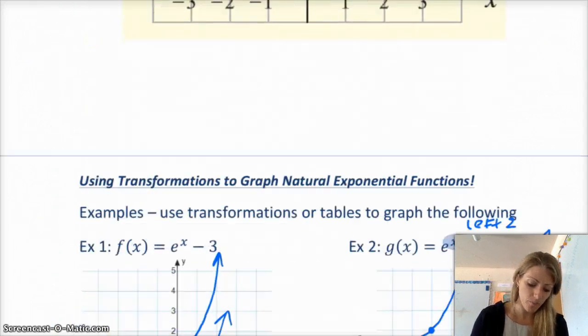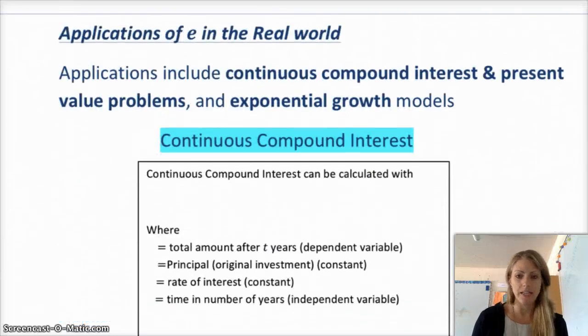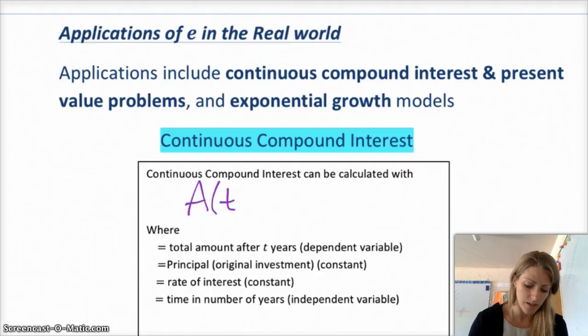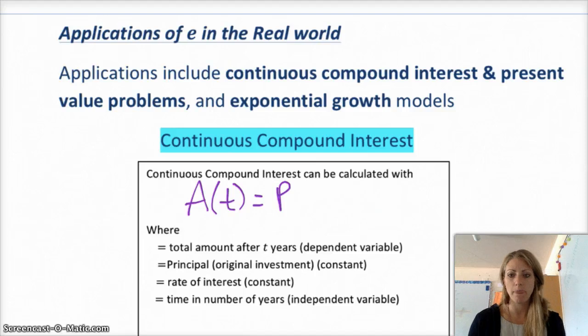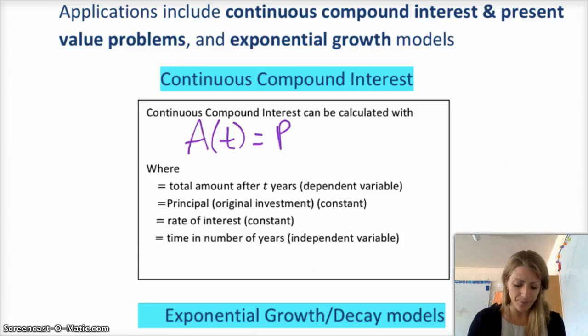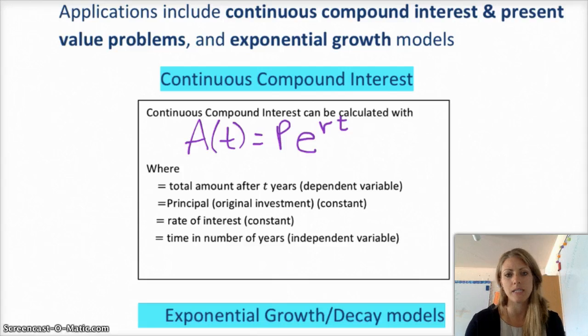Kind of a cool connection there. So, your continuous compound interest is A, the amount of money over a certain amount of time is equal to the original, the principle, right, the original amount that you invest or borrow, times e raised to the r times t, where A of t is the total amount after two years, P is your principle, r is your rate of interest, and t is your time in the number of years.